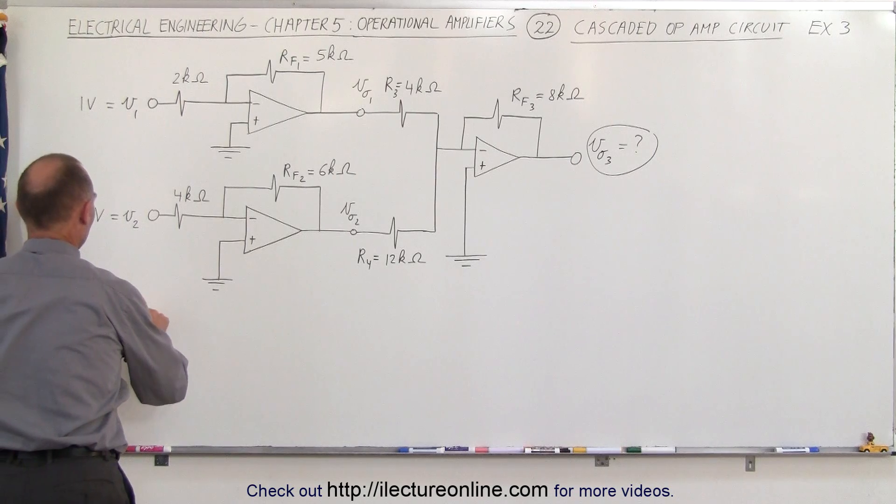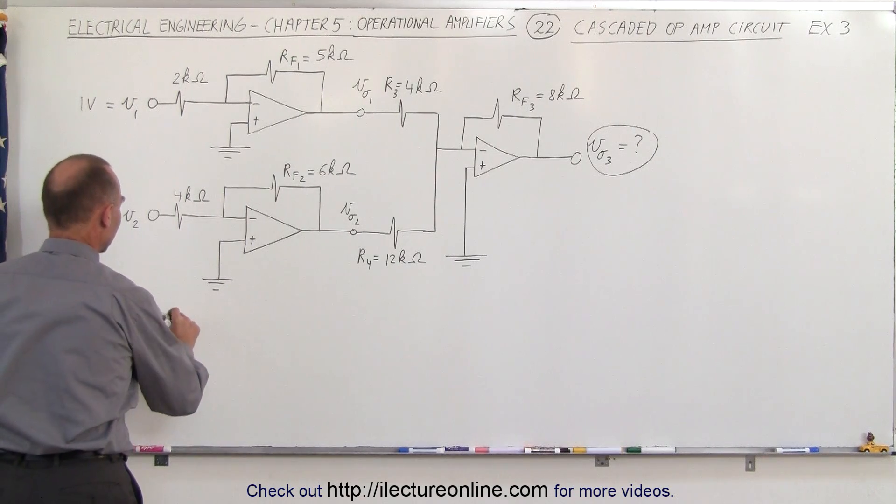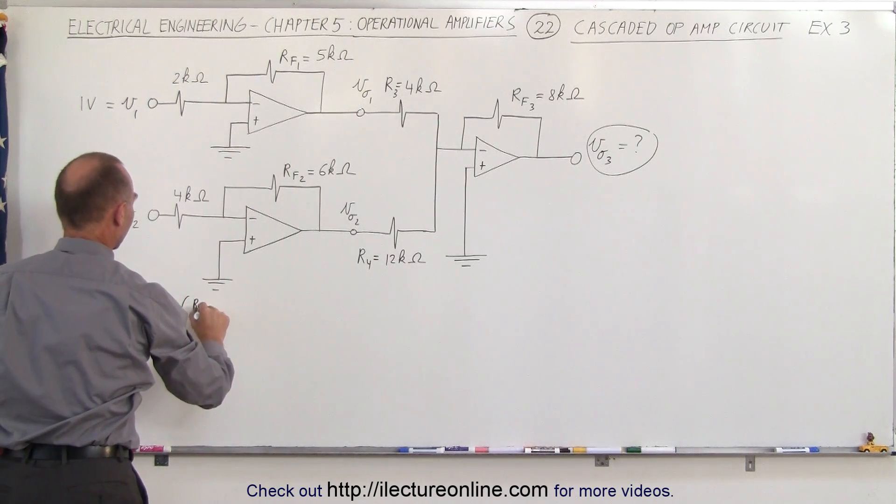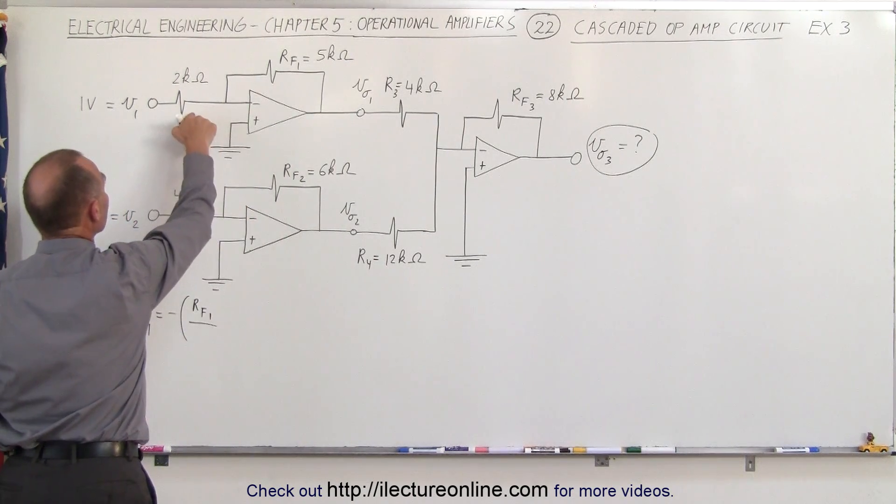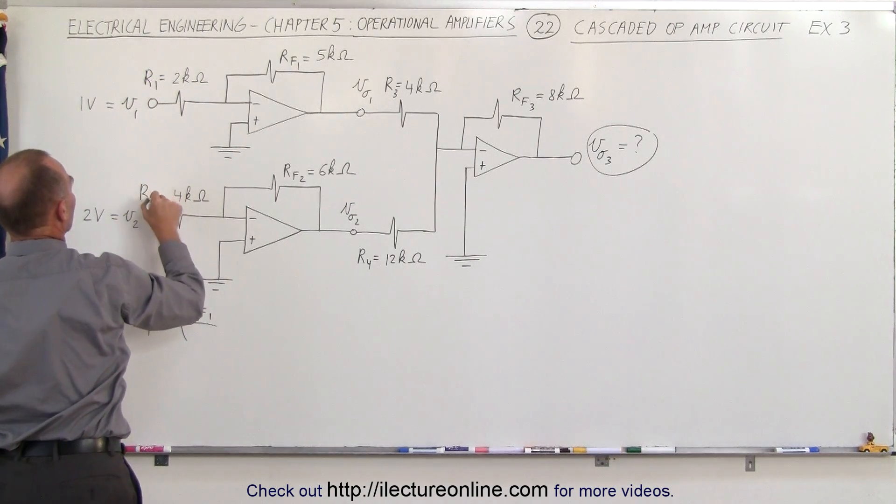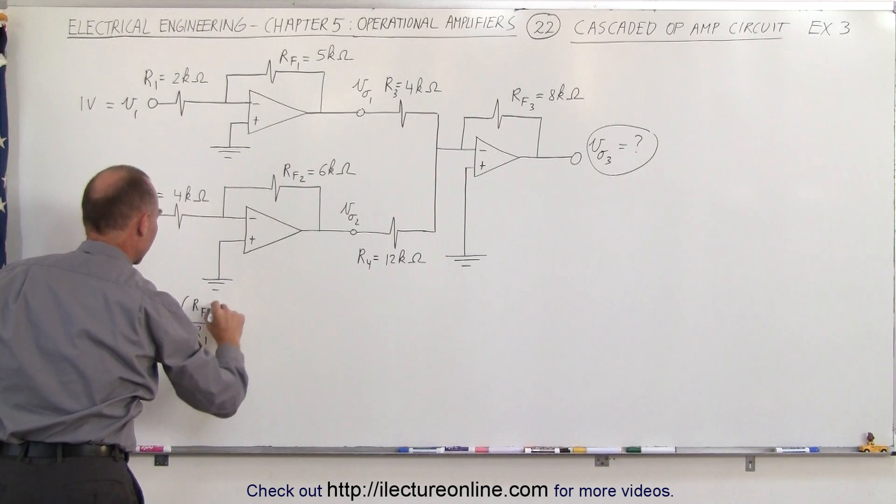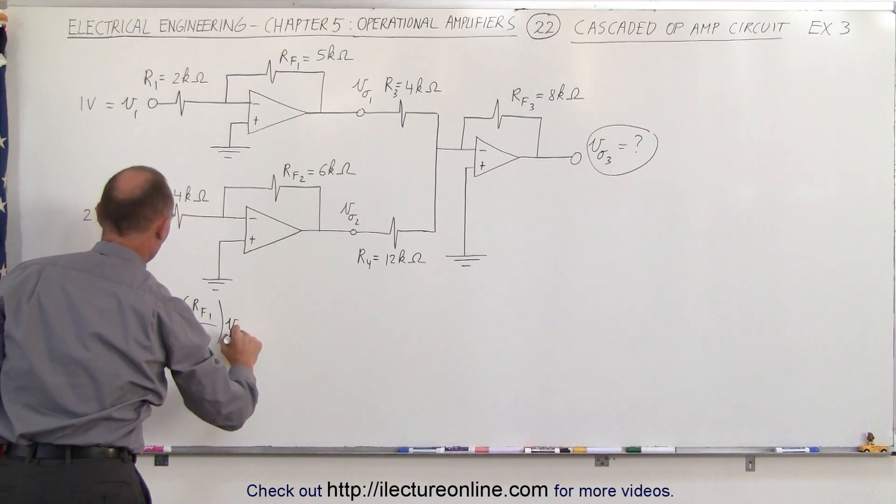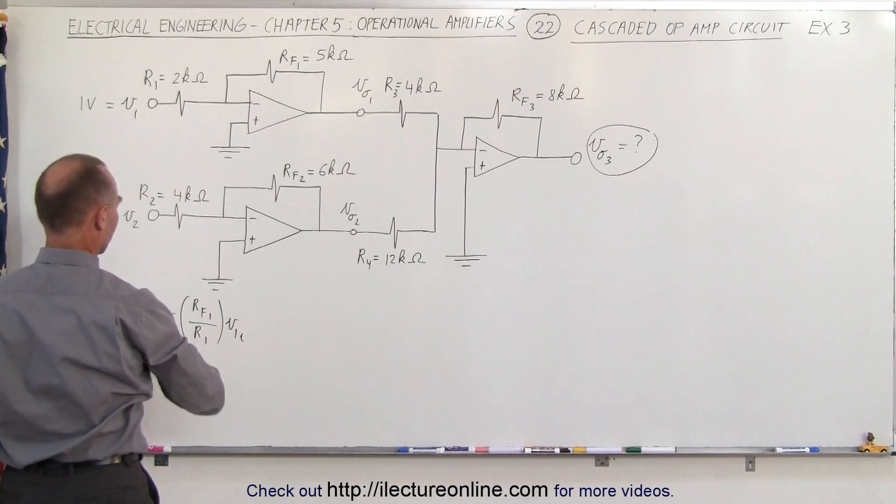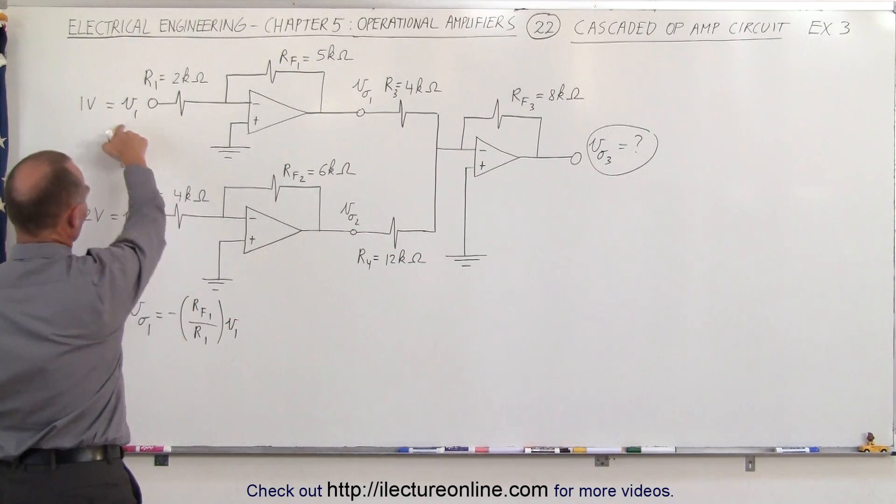We can say that V output of the first is equal to the negative of the ratio of the feedback resistor RF1 to... I didn't write that down. This is R1 and call this R2, so to the ratio of R1 times the input voltage V1. Let's call it just V1, because that's what I call it here.